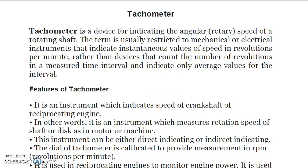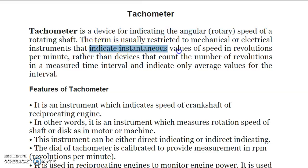Today we are going to study tachometer. A tachometer is a device for indicating the angular speed of a rotating shaft. For measuring angular velocity we use tachometer, and this term is strictly used in mechanical and electrical engineering. Electrical and mechanical instruments that indicate instantaneous value of speed in revolutions per minute are tachometers.